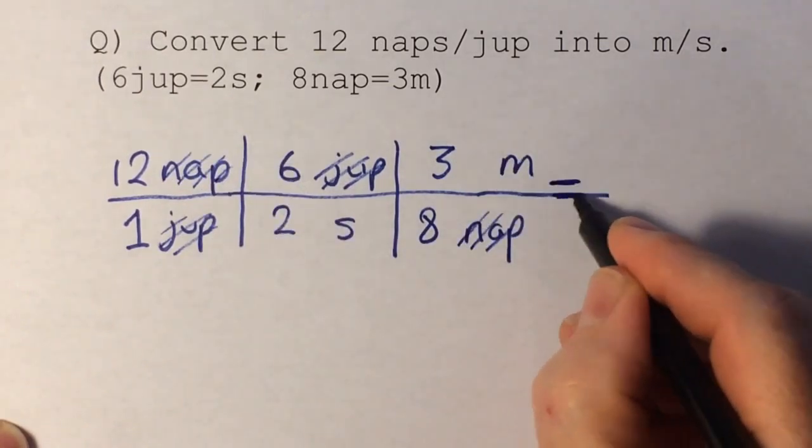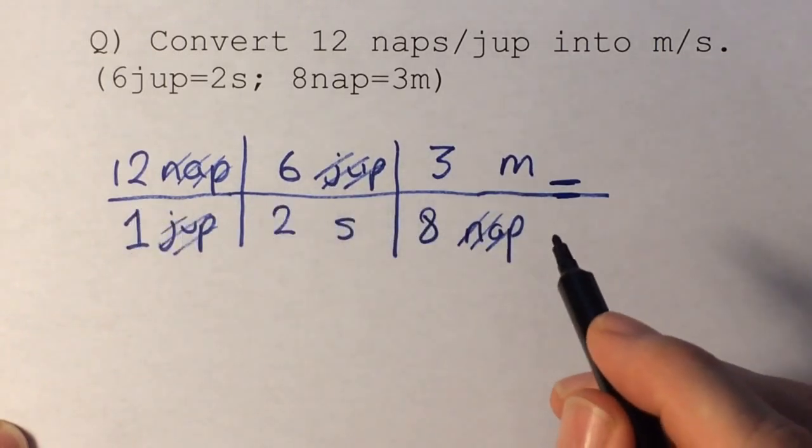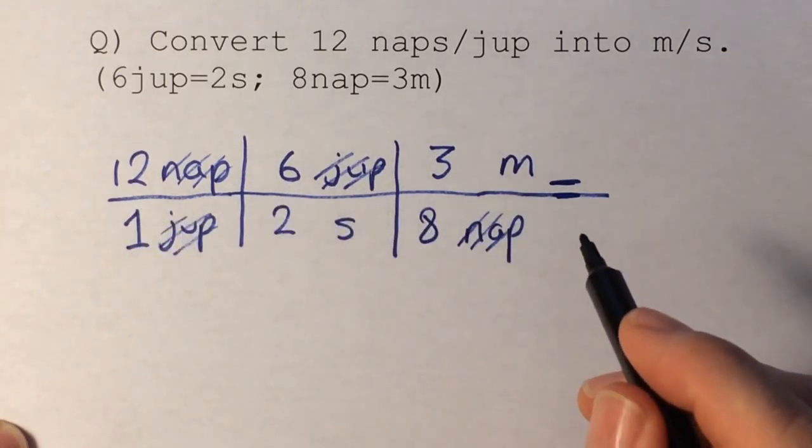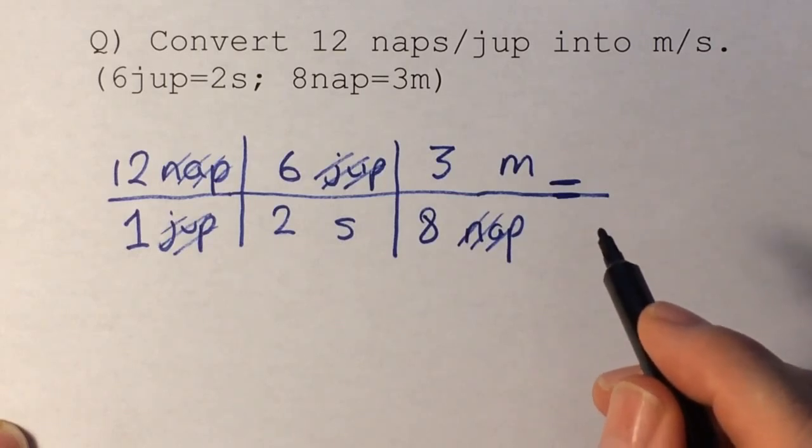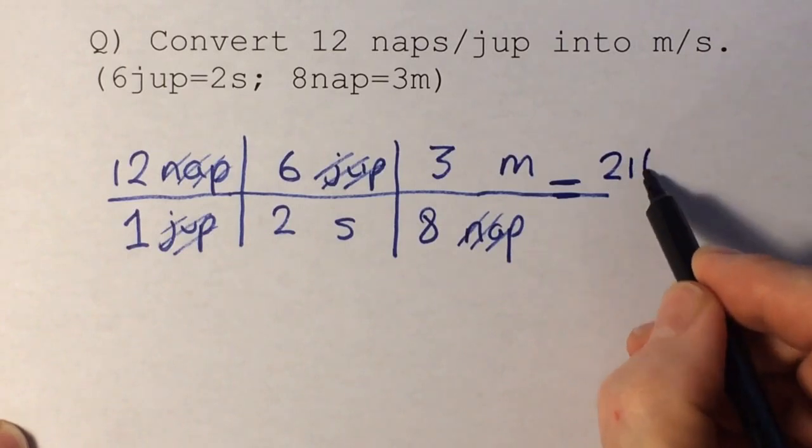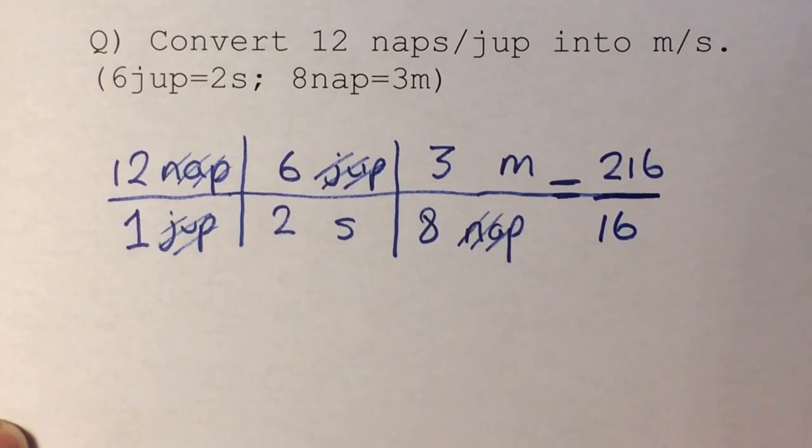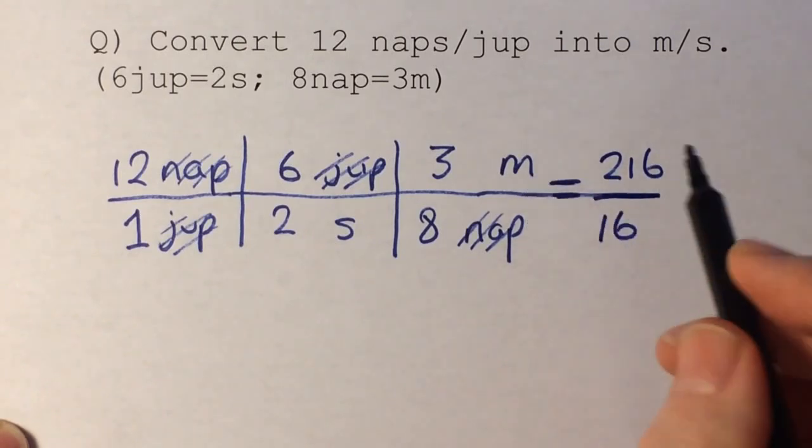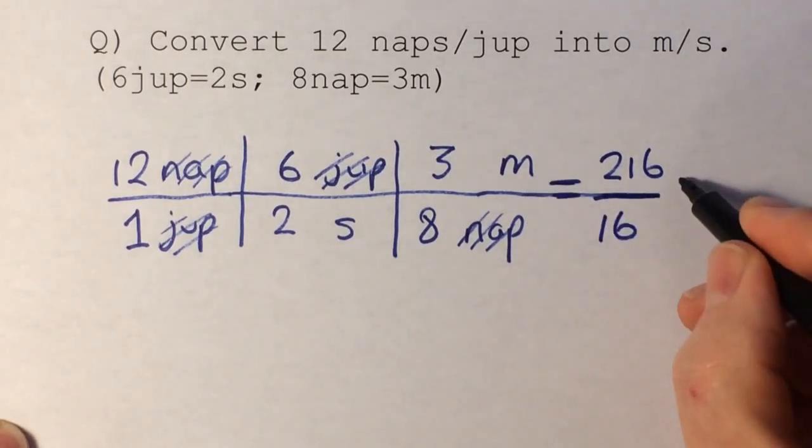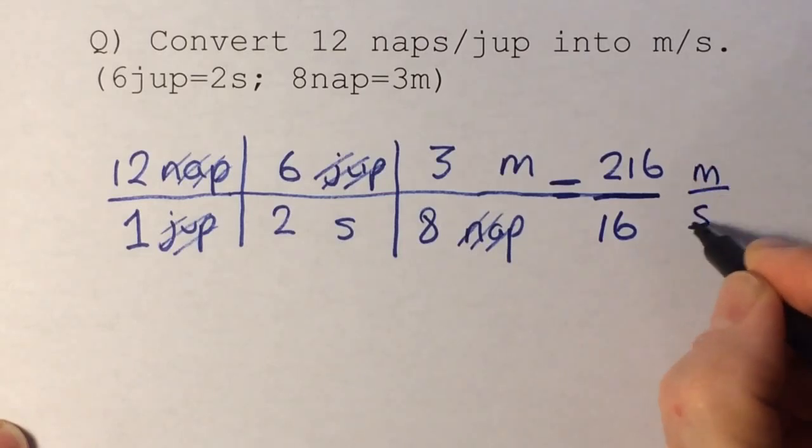So this basically gives me that 12 times 6 is 72, times 3 is 3 times a 21, 216 over 16. And the units, I can cancel that, of course. And the units will be meters per second.